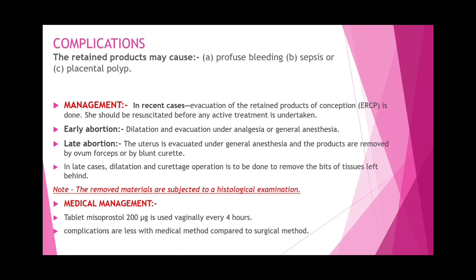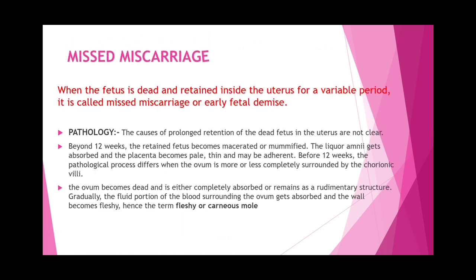Beyond 12 weeks, the retained fetus becomes macerated and mummified; liquor amnii gets absorbed and the placenta becomes pale and thin, possibly adherent. Before 12 weeks, the ovum is more or less completely surrounded by chorionic villi and becomes dead, either completely absorbed or remains as a rudimentary structure. Gradually the fluid portion of blood surrounding the ovum gets absorbed and the wall becomes fleshy.